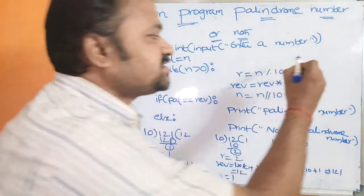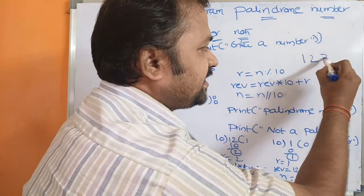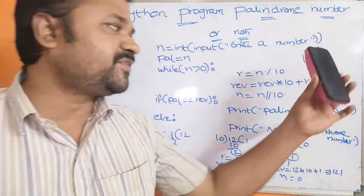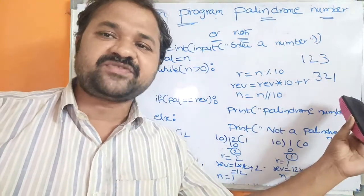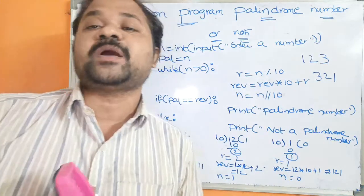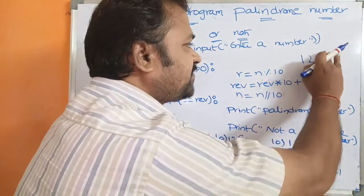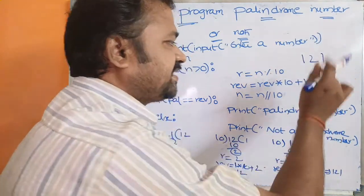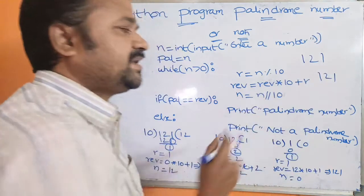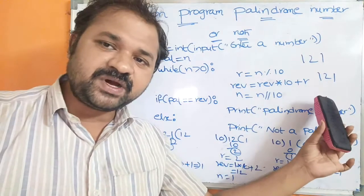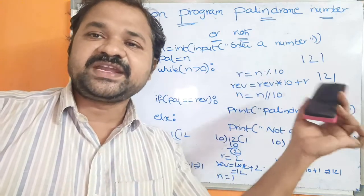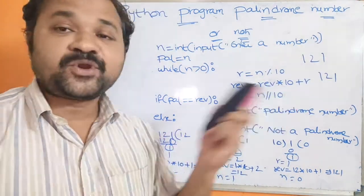Let the number be 123. The reverse of 123 is 321. Since 123 is not equal to 321, we can say that 123 is not a palindrome number. Now let the number be 121. The reverse of 121 is 121 only. Since the reverse of the number is equal to the given number, we can say that 121 is a palindrome number.